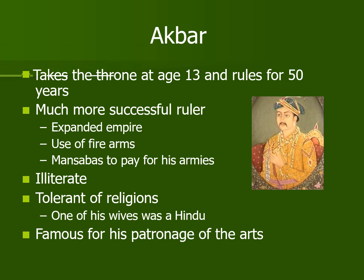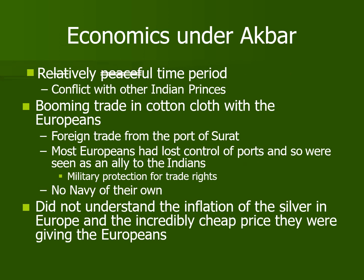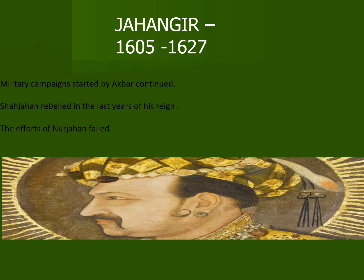One of Akbar's wives was a Hindu Rajput princess, and he was a great lover and patron of the arts. His trade boomed in cotton cloth and he started trading with the Europeans. The next ruler was Jahangir, and the military campaigns started by Akbar continued during his reign. Shah Jahan rebelled in the last years of Jahangir's reign, and Jahangir's wife Noor Jahan tried to manage matters but her efforts also failed.